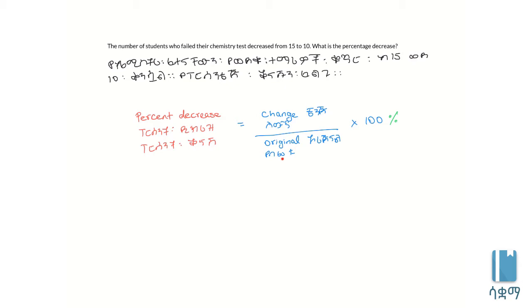In the denominator, we put the original value. In the numerator, we put the change. The change is the difference. When we calculate, we look at what the original value was and find the difference between the values.